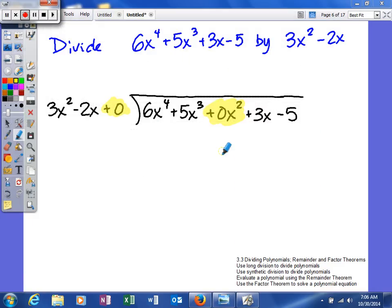Last example we'll look at for long division. We're going to divide 6x to the 4th plus 5x to the 3rd plus 3x minus 5 by 3x squared minus 2x.